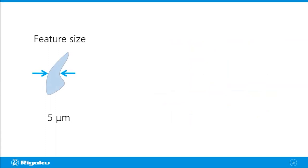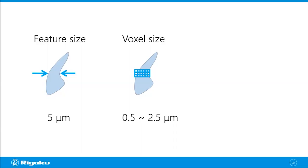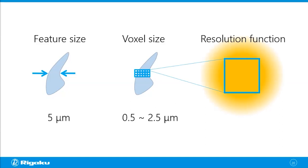To summarize: if the feature you're trying to resolve is 5 microns, the voxel size needs to be at least half of it — you need at least two voxels to sample that area. Ideally, you want something like half a micron to 2.5 microns. But if the resolution function from all the hardware pieces on the X-ray CT scanner is a lot larger than the voxel size, it will blur the image. No matter how small a voxel size you choose, you cannot resolve the feature. So it's also important to make sure the resolution function size is comparable to the voxel size you're selecting.